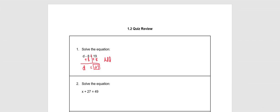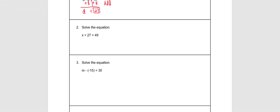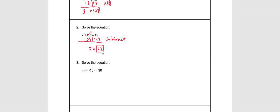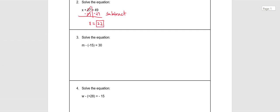For the second example, you have x plus 27 equals 49. The inverse of positive 27 is negative 27, so we subtract 27 from each side. That will cancel 27 minus 27, and then we have x is equal to 49 minus 27, which is equal to 22. That should be the final answer.